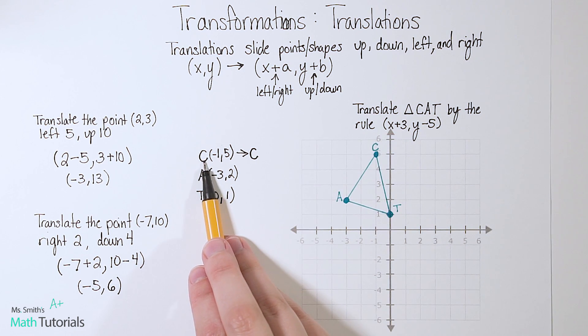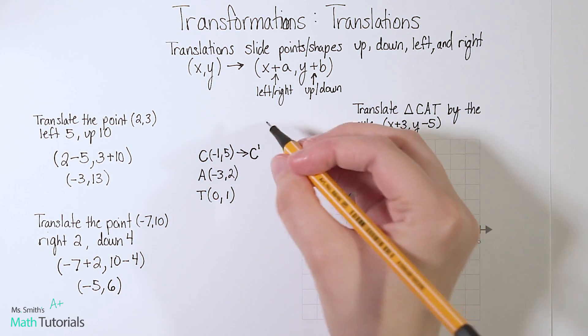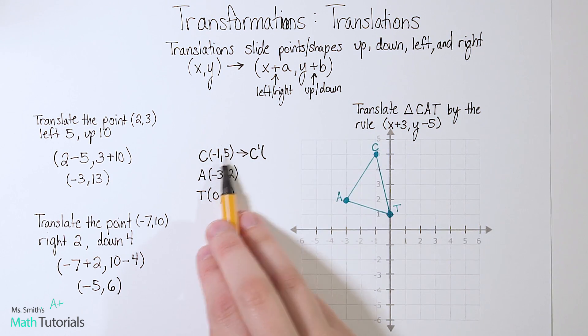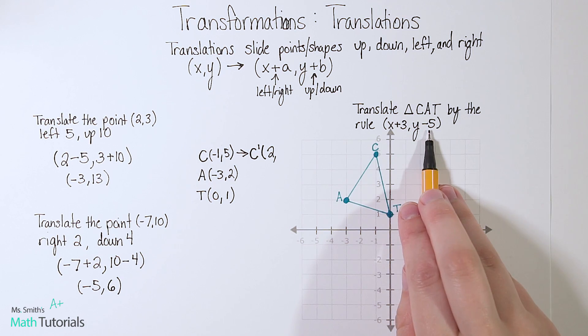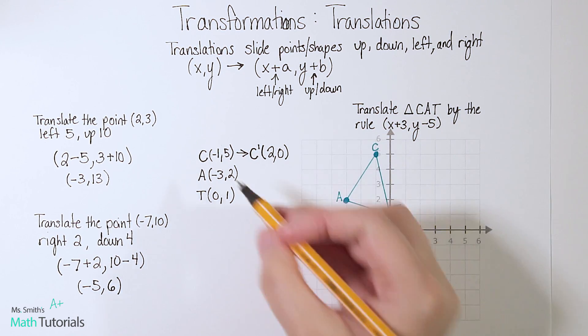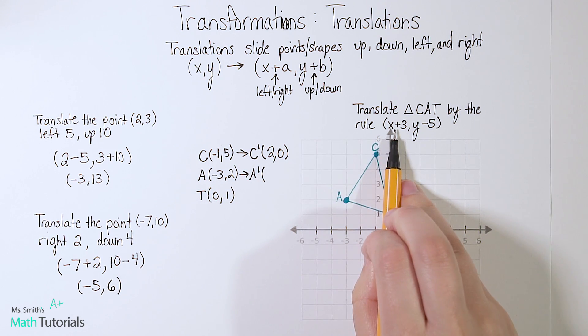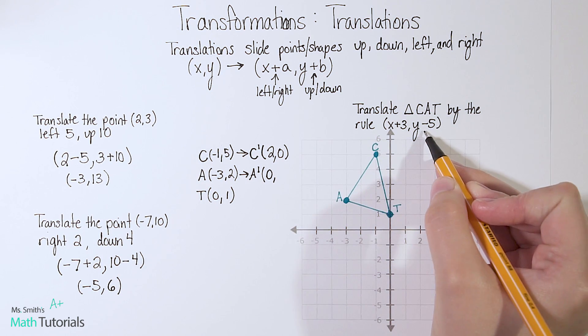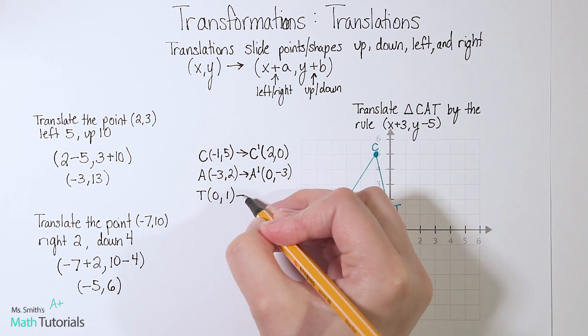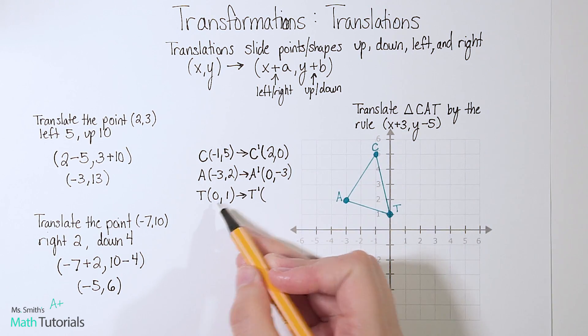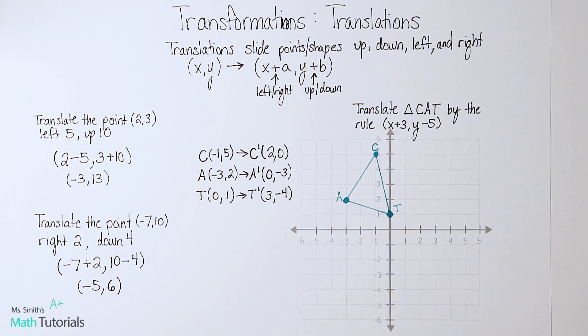Remember in the last video, we talked about how this is the original C. We're going to create a new C, and we call it C prime. It's like a little apostrophe, and it means C prime. It is our new point. So let's think negative 1 plus 3, well that would be positive 2. 5 minus 5, well that's going to be 0. For A, we're going to create an A prime. Negative 3 plus 3, that's going to be 0. 2 minus 5, that's going to be negative 3. Let's take this T and make a T prime. So 0 plus 3 is going to give me 3. 1 minus 5, that's going to give me negative 4.